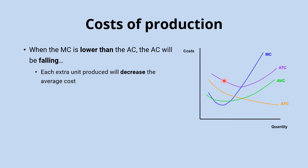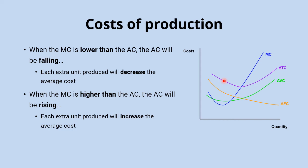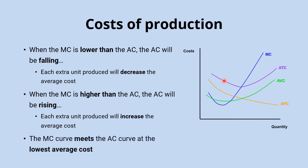So if the marginal is below the average, the average has to be falling. Similarly, if the marginal is higher than the average, the average has to be rising. In that same situation, if you enter the room with 15 pounds, the marginal is above the average, and that will pull the average up — to just a little bit below 10 pounds 50 after you've entered with 15 pounds.